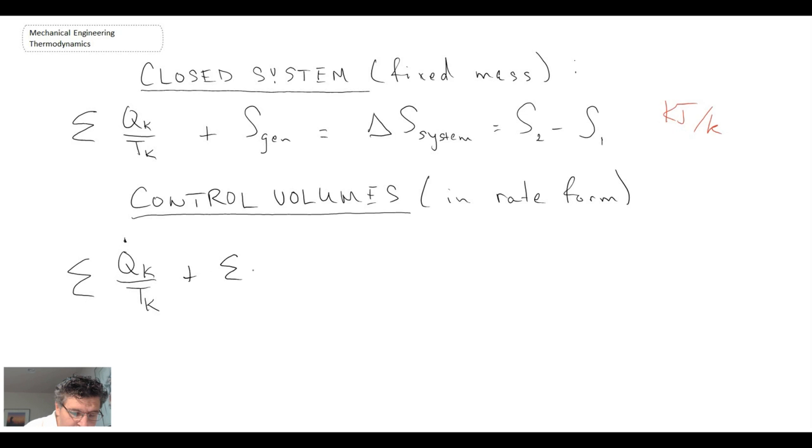Now we have the mass crossing the boundary, so we could have mass coming into our control surface, and then we sum all mass exiting, because we could have multiple inputs and multiple outputs depending upon the system, plus generation within our control volume. And then that would be equal to the change in entropy for the control volume. And the units of this, given it's in rate form, will be kilowatts per kelvin.